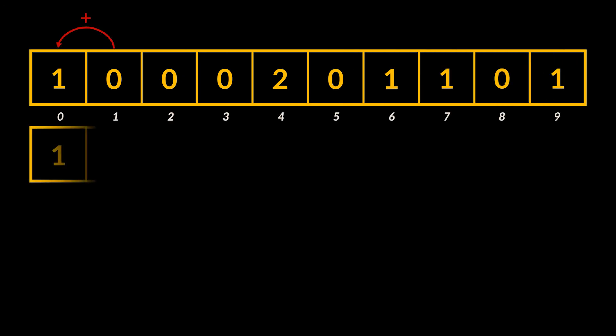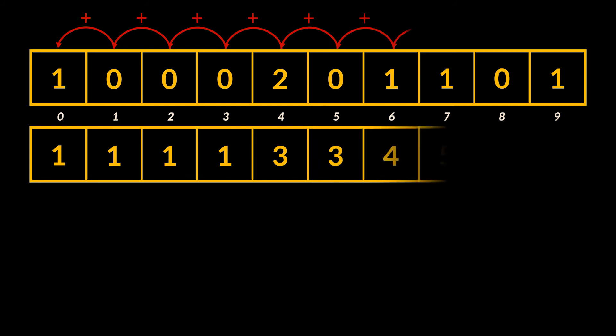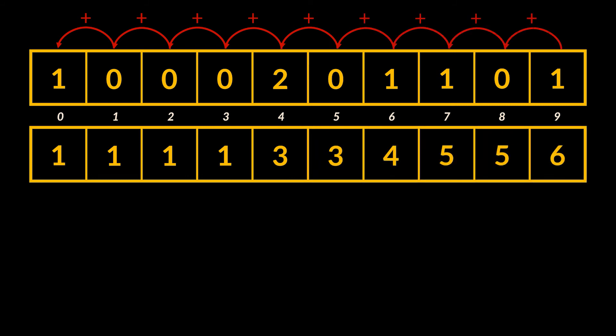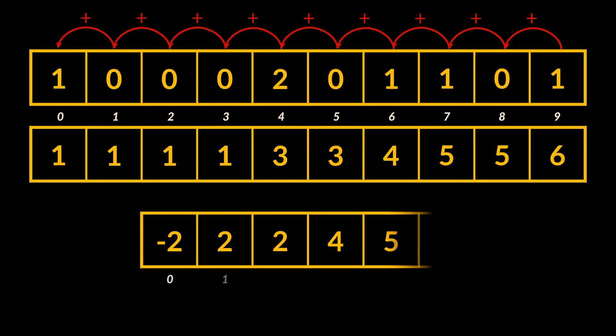Now let's look back at our example. If we take the occurrences array and add each value to the one preceding it — so index zero remains the same but the value at index one becomes index one plus index zero, and so on — you may notice that the index where a value changes is actually the value present in our initial array. For example, the recurring ones switch to a three at index four, corresponding to value two, and value five switches to a six at index nine, corresponding to value seven. What we've done here reaches far beyond just counting — the value stored in this array no longer represents occurrences but instead represents the actual final index of each value inside the sorted array.